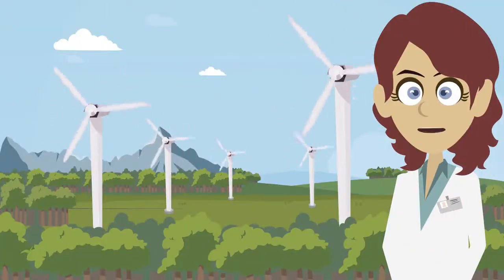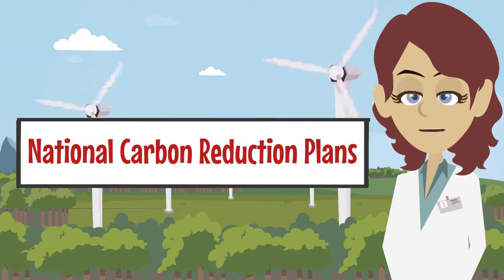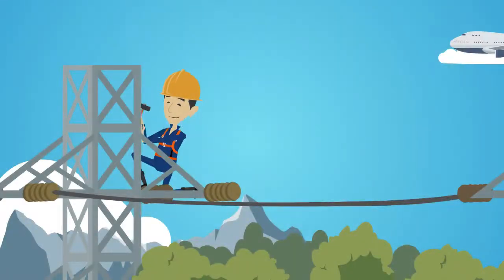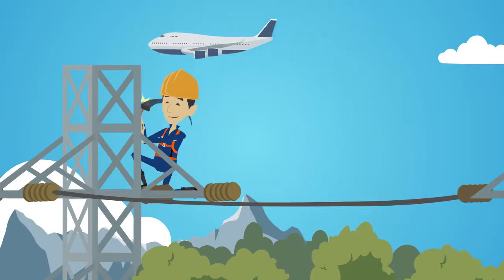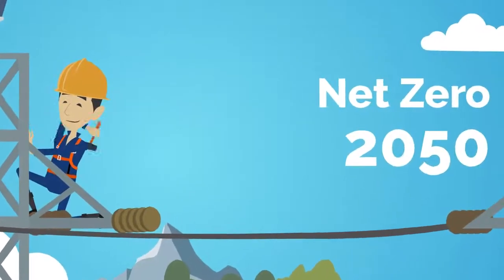Most governments are responding with national carbon reduction plans. The UK amended the Climate Change Act in 2019 so that we, as a country, need to be net zero for carbon emissions by 2050.